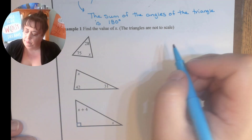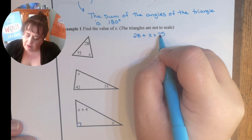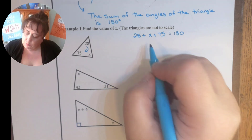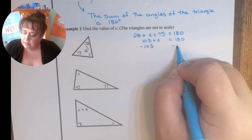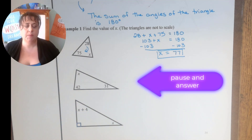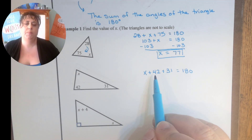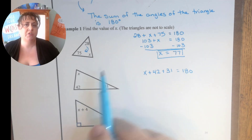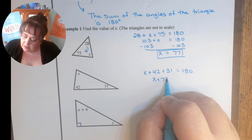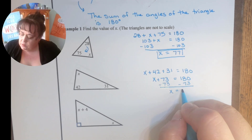You have to show the equation. So you need to show that 28 plus x plus 75 equals 180. So 28 plus 75 is 103. Subtract 103 from both sides and you get x equals 77. For the next one: x plus 42 plus 31 equals 180. It doesn't matter what order you write it, so long as you're adding all three. So x plus 73 equals 180. Subtract 73 from both sides: x equals 107.